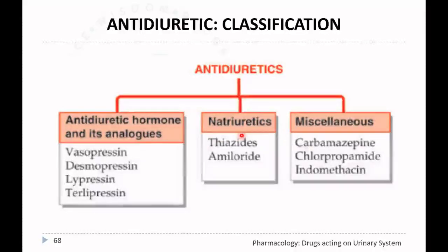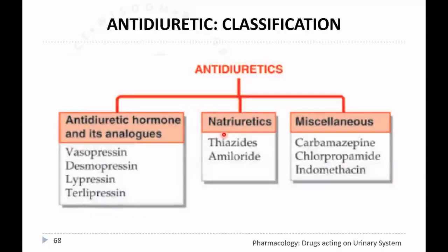The second class of anti-diuretic drugs are the natriuretics. Natriuretics are agents that increase the excretion of sodium without enhancing the excretion of water. Examples include amiloride and thiazides.